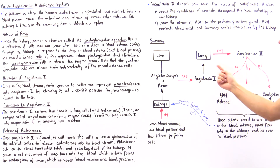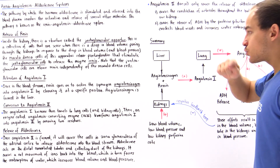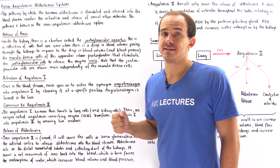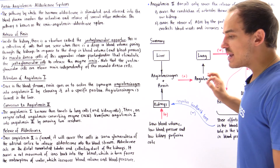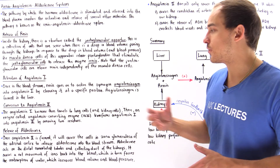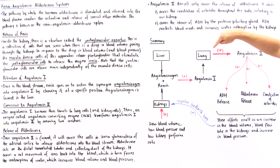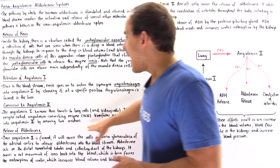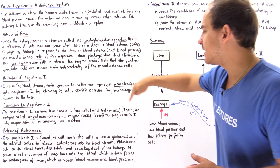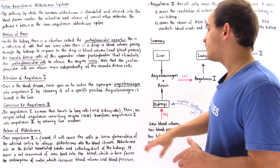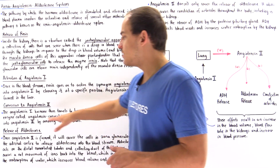Once angiotensin I is activated, it travels through our bloodstream and ends up at lung cells as well as kidney cells. Those cells contain a special enzyme known as ACE — angiotensin converting enzyme — which converts angiotensin I into angiotensin II by cleaving two residues on the molecule.